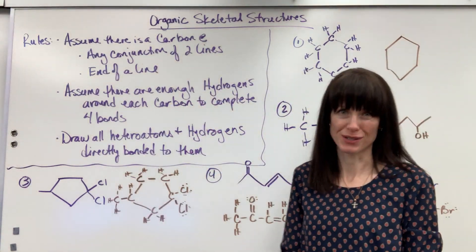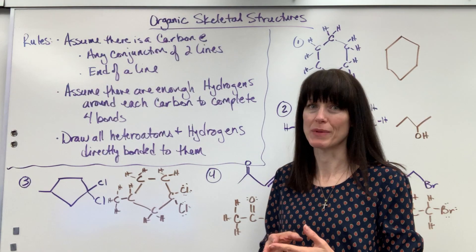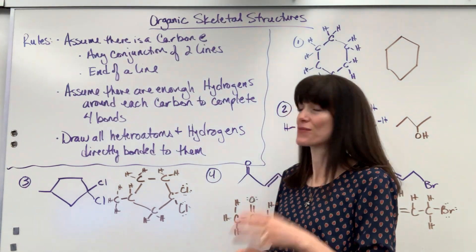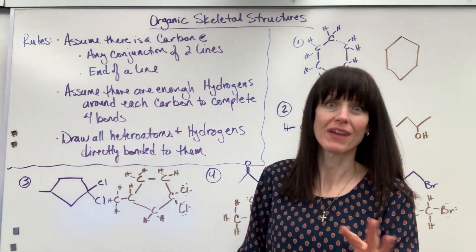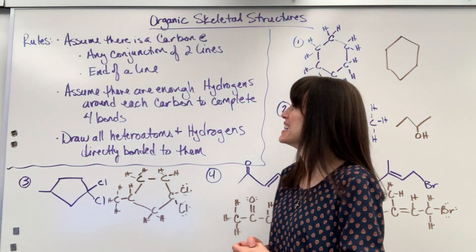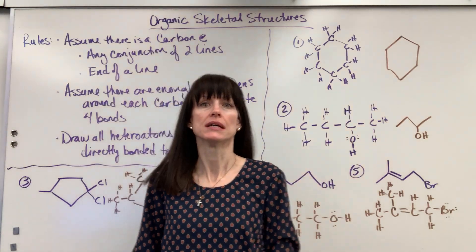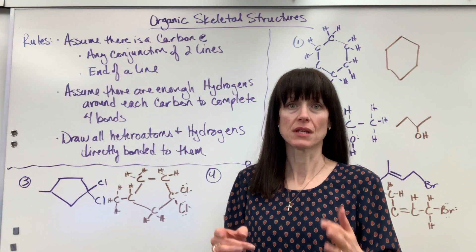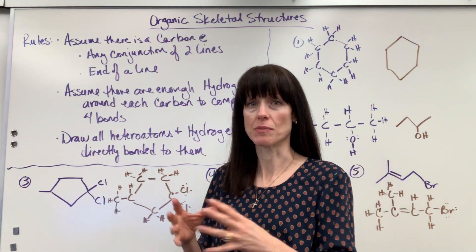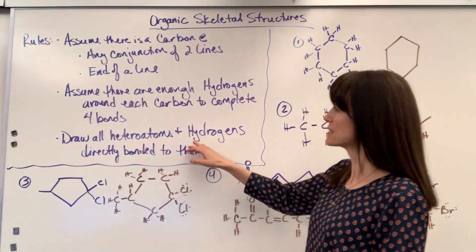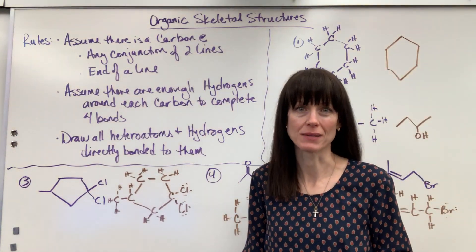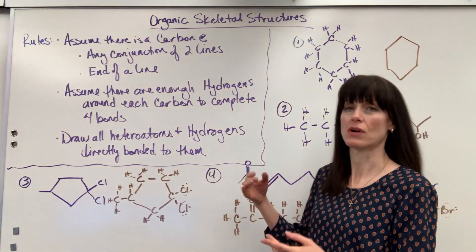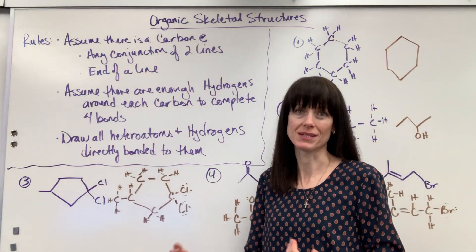Assume that there are enough hydrogens around every single carbon to give it a total of four bonds. You know the carbon has four valence electrons, so it needs four more valence electrons to have a full octet. So when we draw these skeletal structures, it's assumed and understood that every single carbon is populated with a total of four bonds. Lastly, draw all heteroatoms — remember those are atoms other than carbon and hydrogen — and draw the hydrogens that are directly bonded to them.